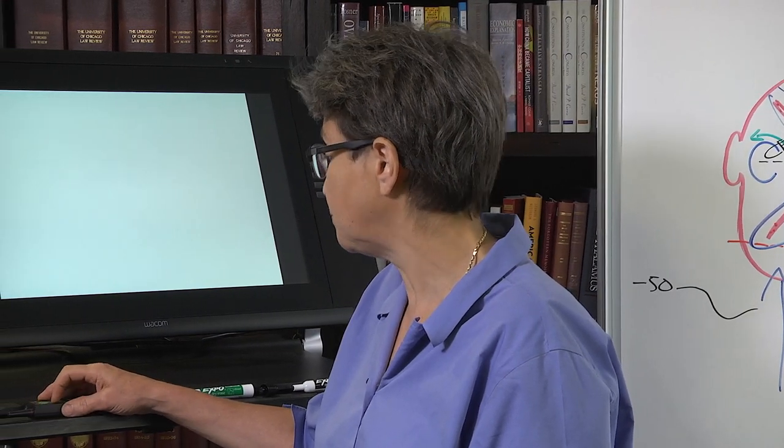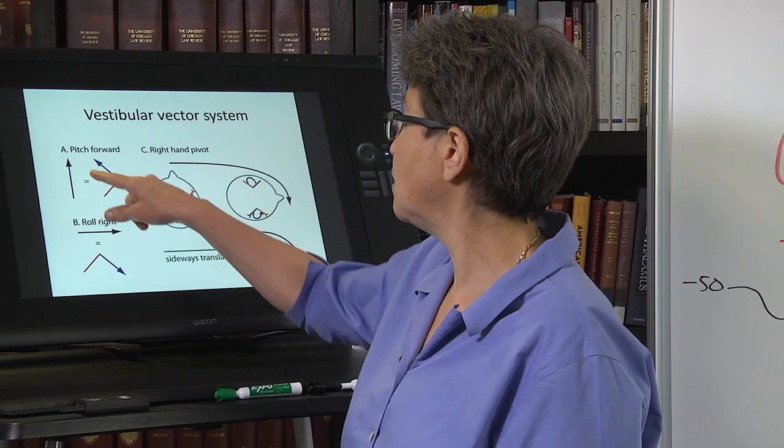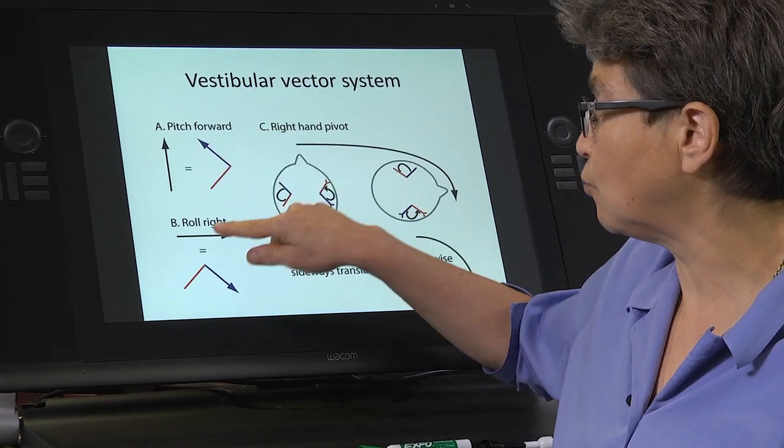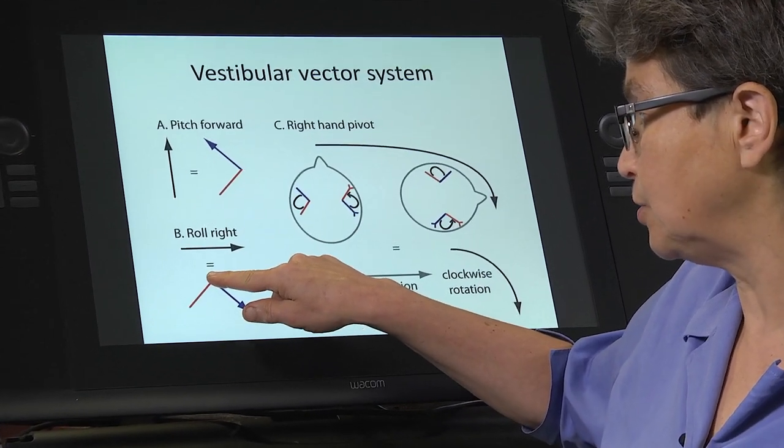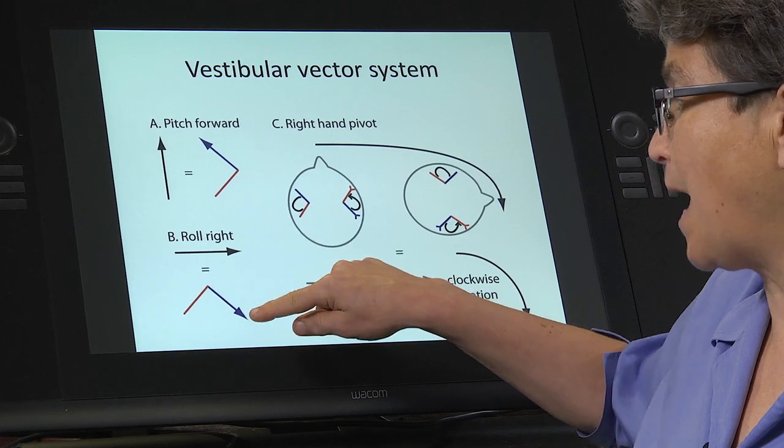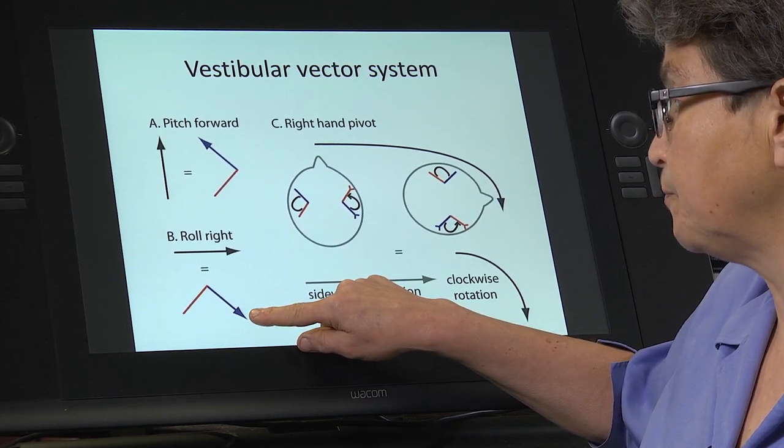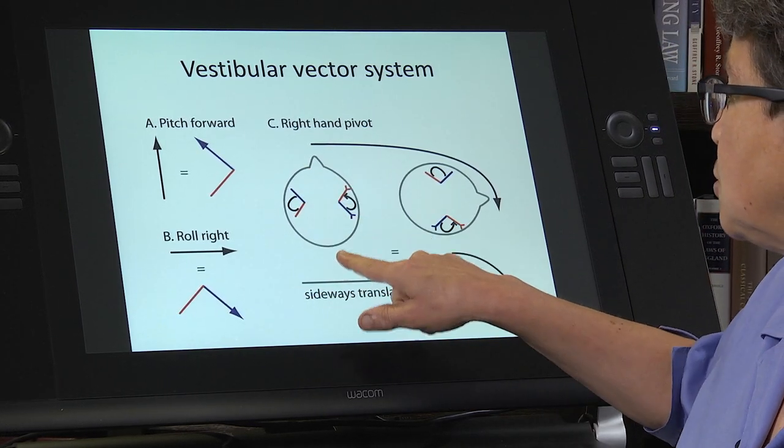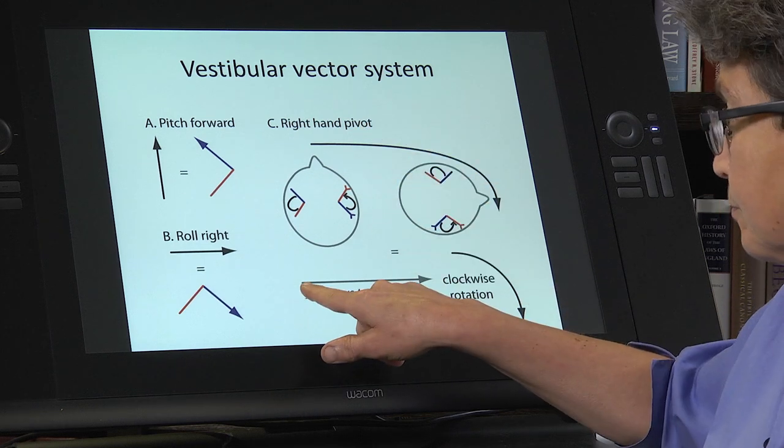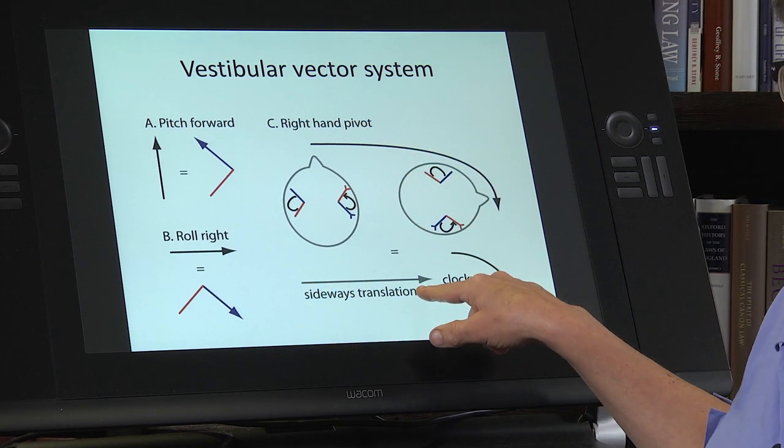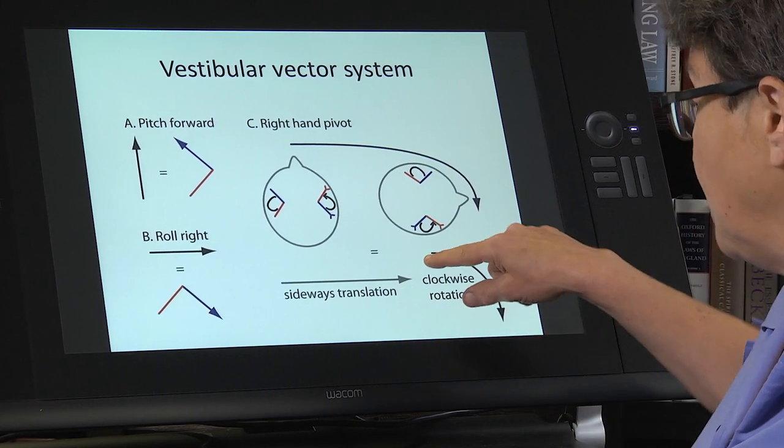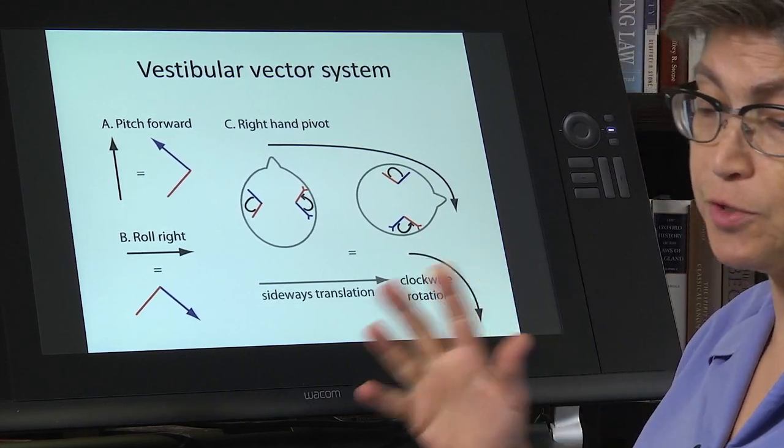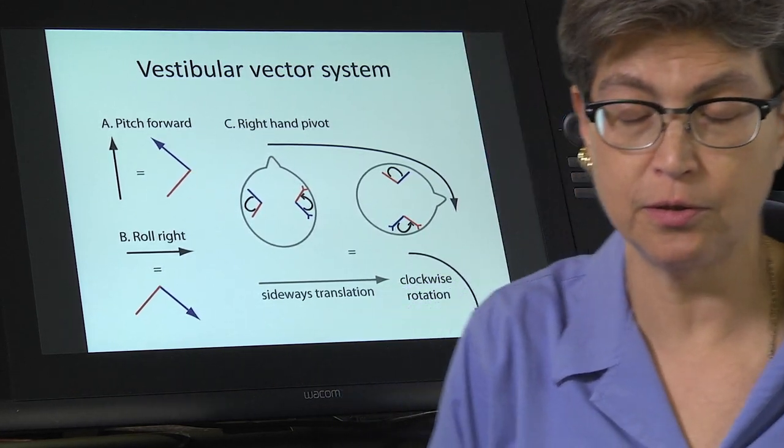So, just to show you examples of that right here, what I just showed you is that pitch forward is a pitch to the right and a pitch to the left. A roll right is a pitch to the right and a backward pitch to the right. A forward pitch to the right and a backward pitch to the right. And then if you do something such as a right-hand pivot, there is a sideways translation that is going to affect, it is a piece of linear acceleration that will be coupled with a yaw rotation. Okay. And the response will be accordingly.